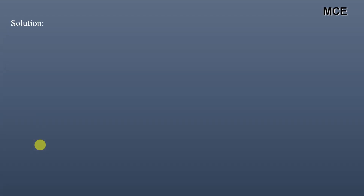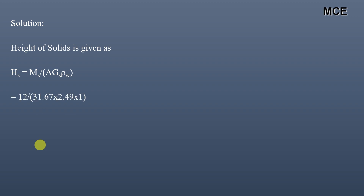The height of solids is given as: Hs equals mass of specimen divided by area of specimen multiplied by specific gravity of solids multiplied by density of water. So it will be 12 divided by 31.67 multiplied by 2.49 multiplied by 1, which is equal to 0.1522 cm or 1.522 mm.